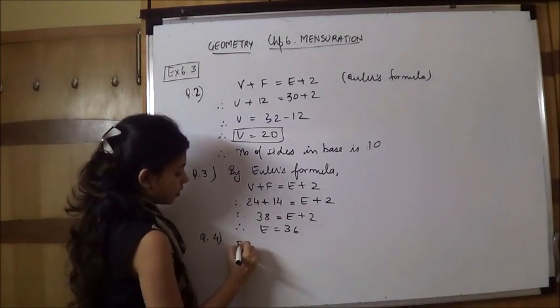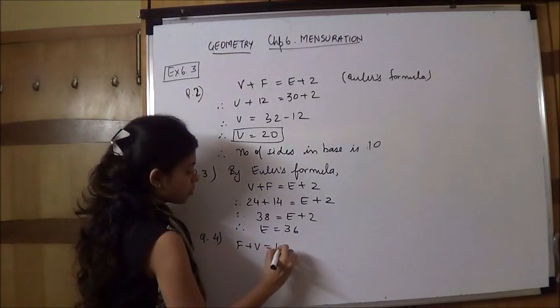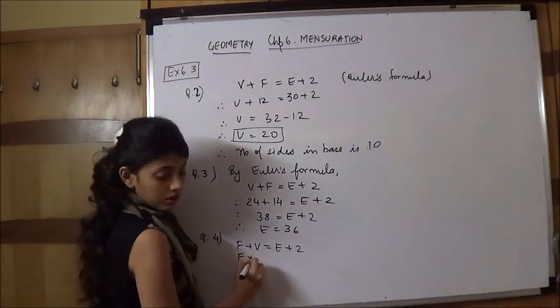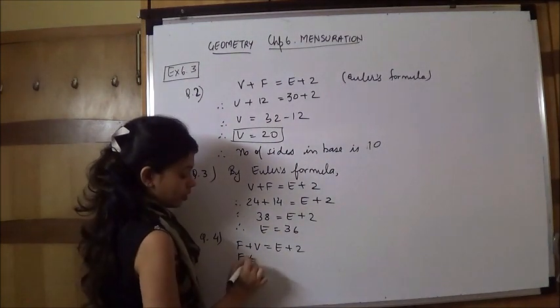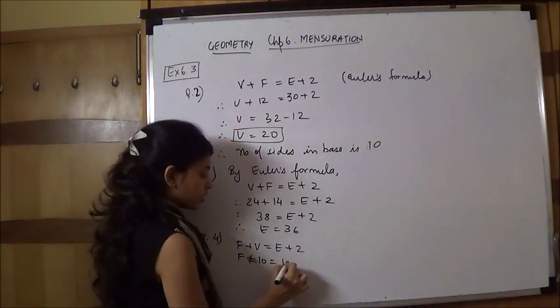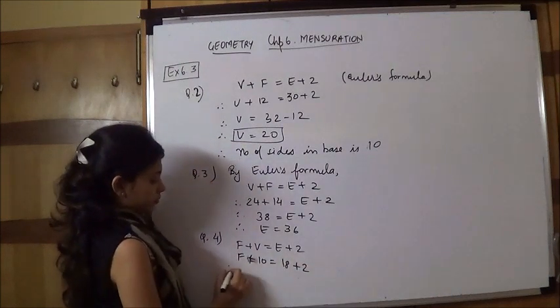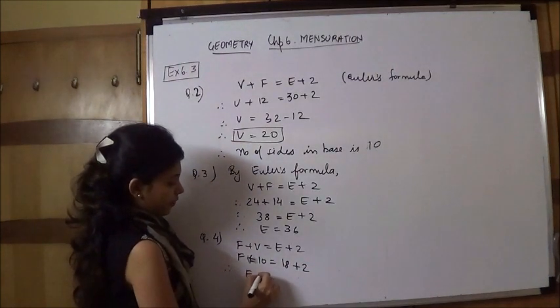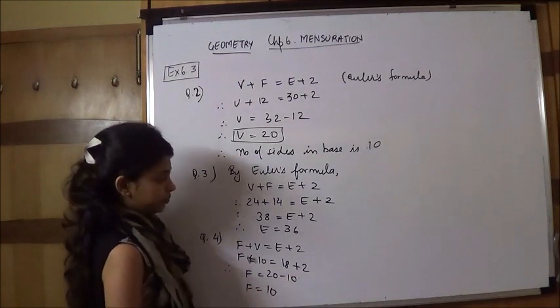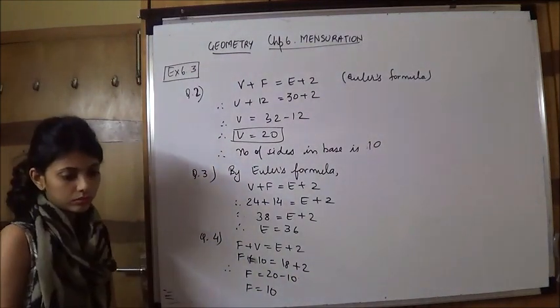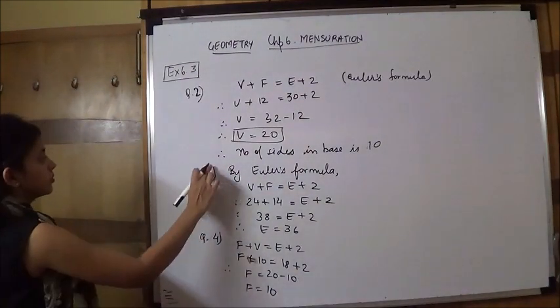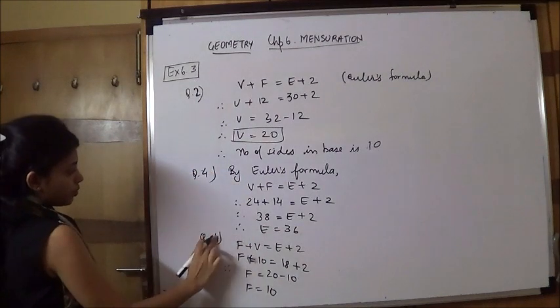For a solid, we are given V and E is 18. So again, F plus V equals E plus 2. V is 10, E is 18. F equals 20 minus 10, that is F equals 10.